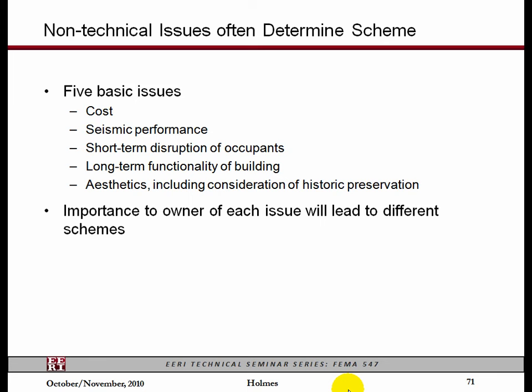There are non-technical issues that often determine what your retrofit scheme is, because in the end you have to satisfy the owner. The owner normally has five basic issues: they're always concerned about cost; sometimes about exact seismic performance; always about short-term disruption if people are going to stay in the building; about long-term functionality — they don't want a shear wall down the middle of their auditorium; and sometimes aesthetics. If you could go to the owner before you started and get them to rank the importance of every one of these things, you would come to the final scheme much more quickly. Unfortunately, it's very difficult to do that because it's hard for them to react until they actually start seeing some schemes.